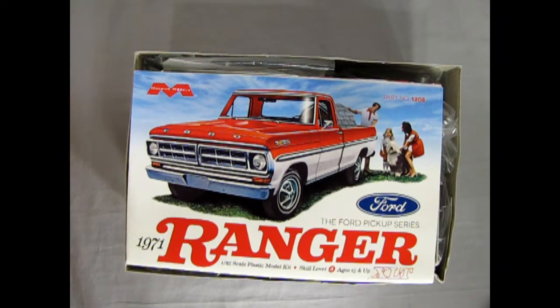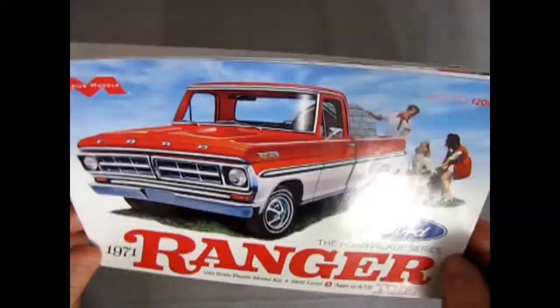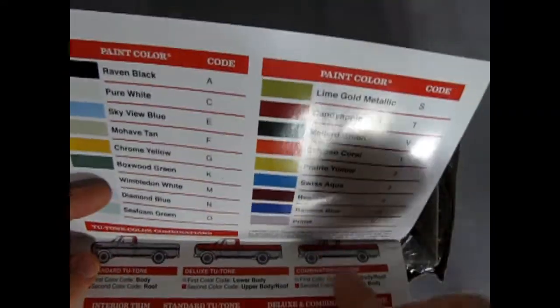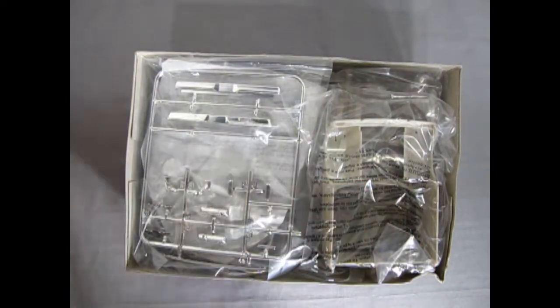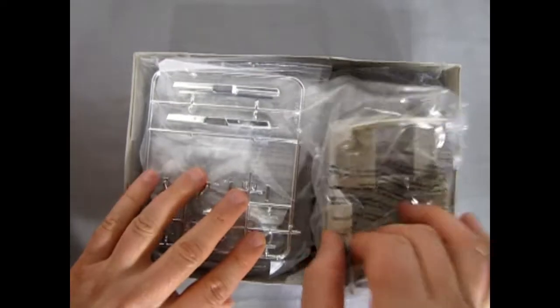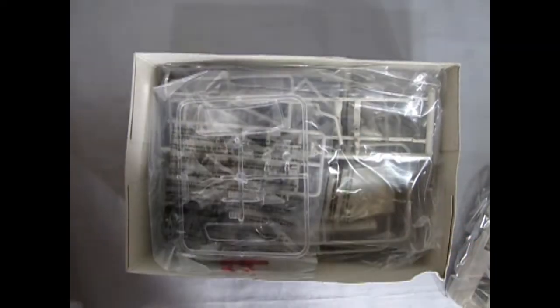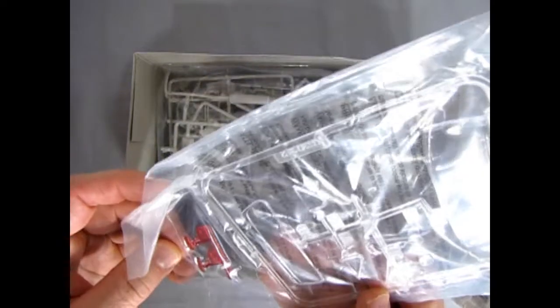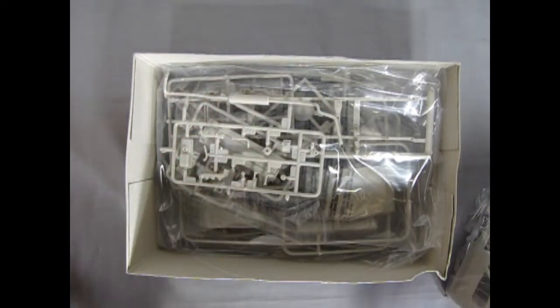So we'll just pull the lid on here. Right away we're greeted with Mobius's amazing full color instruction sheet and I wish the other manufacturers would copy this because this is amazing. I know it costs a little more but it is well worth it, especially when you can see the paint colors with the name of the paints on there. Our mysterious decal sheet. Everything is nicely packed separately in bags. Chrome all bagged up. Glass in bags so it doesn't rub together and scratch.